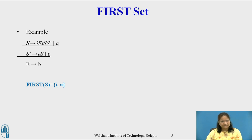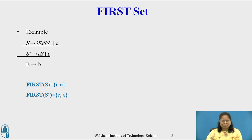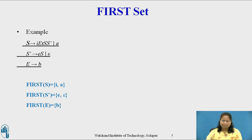To compute First(S'), consider the production S' derives e S or epsilon. First(S') = First(e S) ∪ First(epsilon). First(e S) = { e } since e is a terminal, and First(epsilon) = epsilon by Rule 2. So First(S') = { e, epsilon }. To compute First(E), consider the production E derives b. First(E) = First(b) = { b }. So First(E) = { b }.